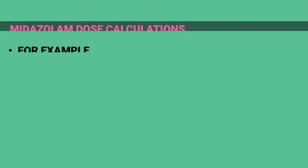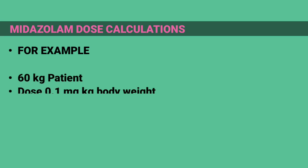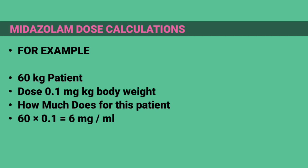Midazolam dose calculation example: for a 60 kg patient, at a dose of 0.1 mg per kg body weight, how much dose is required for this patient? 60 × 0.1 = 6 mg.